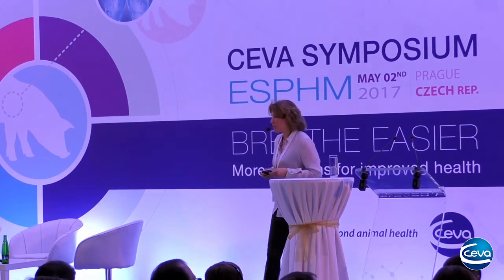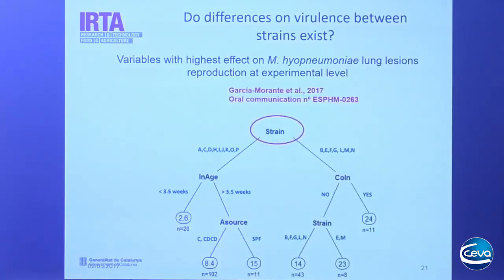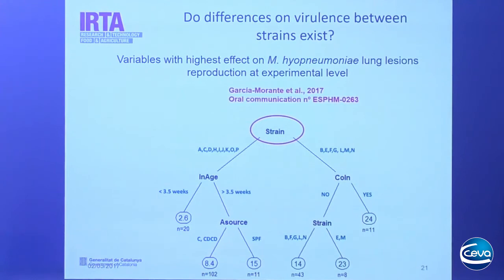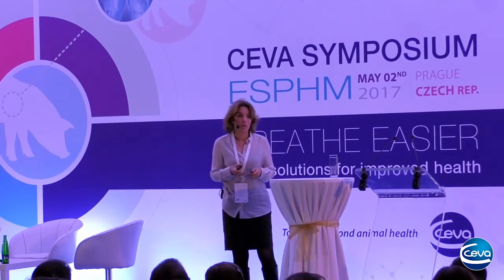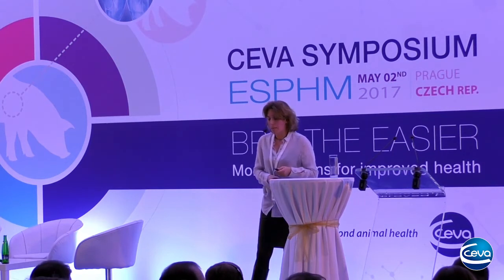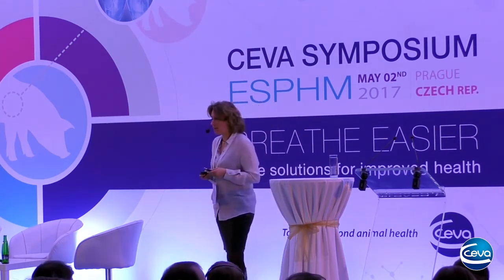Another study corroborating these results is a communication to be presented at this congress. The objective was to identify which variables most affect the reproduction of lung lesions attributed to Mycoplasma hyopneumoniae. Through statistical analysis comparing all experimental inoculations published so far, we found that the strain is one of the most important parameters for reproducing the disease. So virulence of the strain is really important. But how can we know if an isolate detected in our animals is highly virulent, moderately virulent, or low virulent?